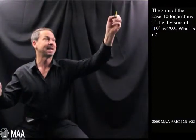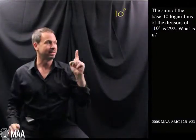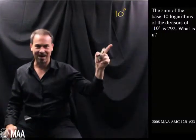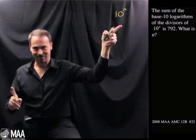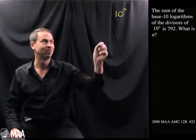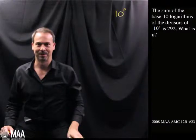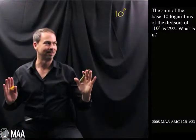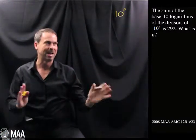So the factors of 10 to the n. So if I took the sum of the logarithms of the factors of that, got that, the answer is apparently 792. And from that piece of information, we're meant to deduce what n is. All right. So it's basically about factors and the logarithms of those factors and then adding them up.